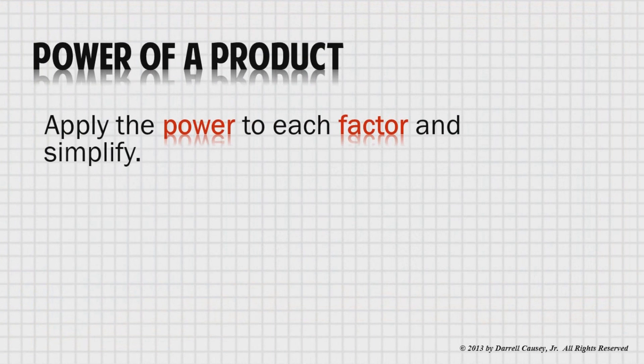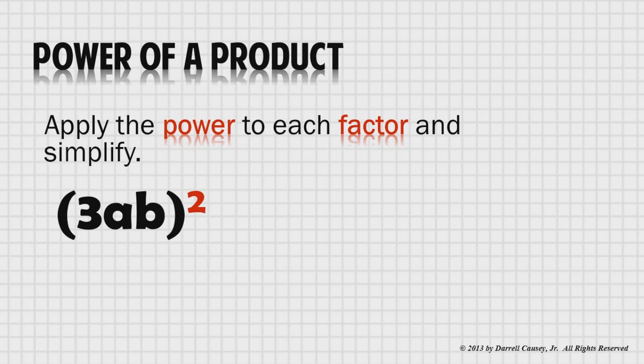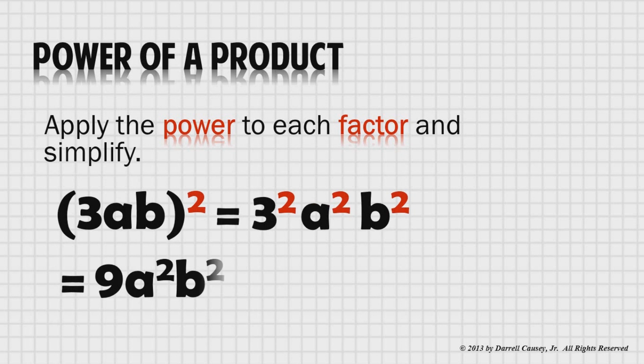Our next part here is the power of a product. Apply the power to each factor and simplify. So we have quantity 3ab squared, which means then 3 squared, a squared, b squared, and is 9a squared b squared when we simplify it. Pretty straightforward.